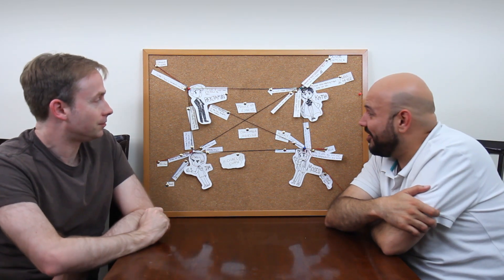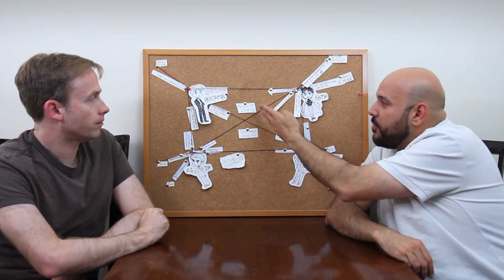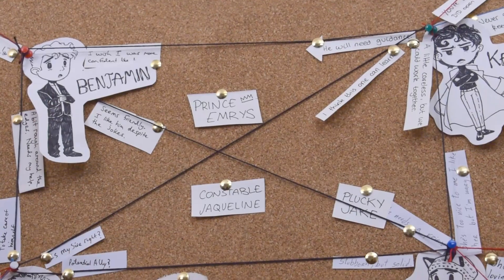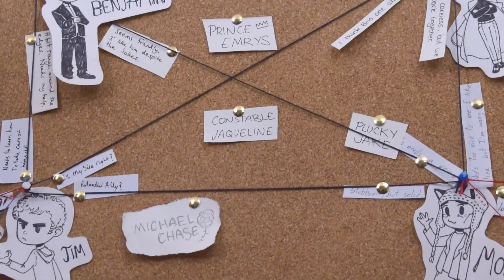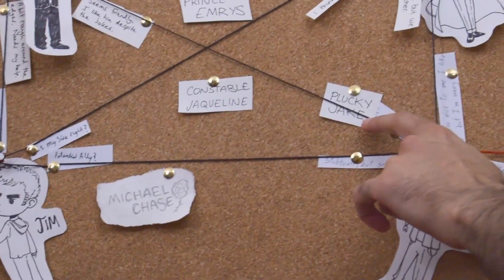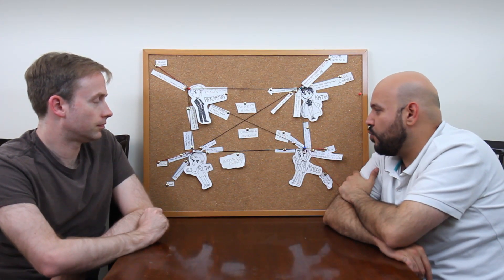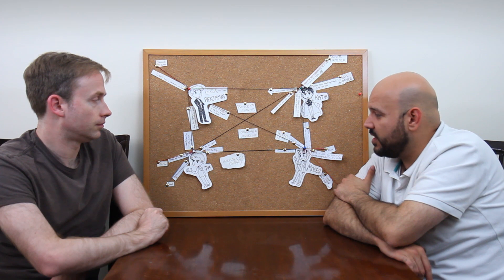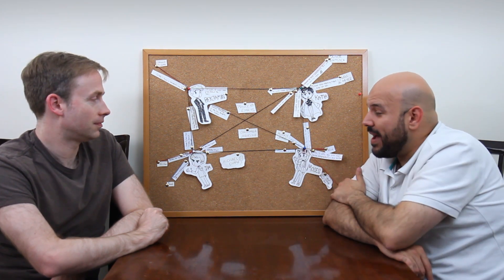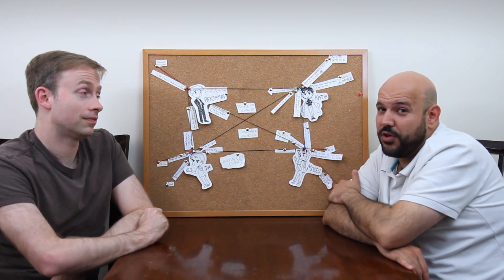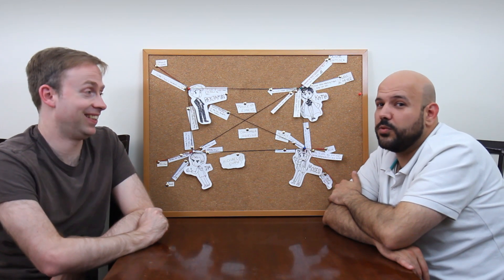There are other characters here with us, characters that are central to the story as well. We have Prince Emrys and Constable Jacqueline from clans Ventrue and Gangrel, respectively. There's also Plucky Jake, which is the Nosferatu primogen, hence the proximity to Moses. And from last week's stream, we have Michael Chase, the primogen of the Toreador. Who is a lovely man, according only to Ben.